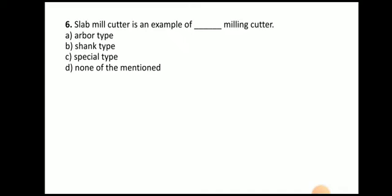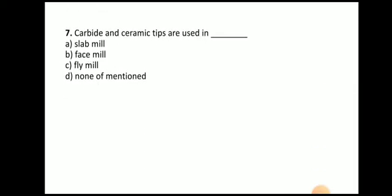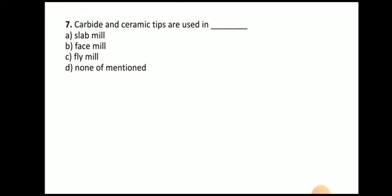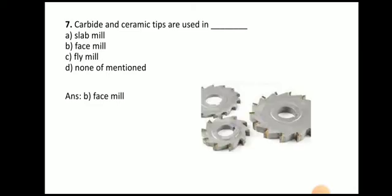Next question: slab mill cutter is an example of — arbor type, shank type, special type, or none of the mention. The answer is arbor type. Next: carbide and ceramic tips are used in — slab mill, face mill, or fly mill. The answer is face mill. Here you can see the face milling cutter where the tip is made up of carbide material.